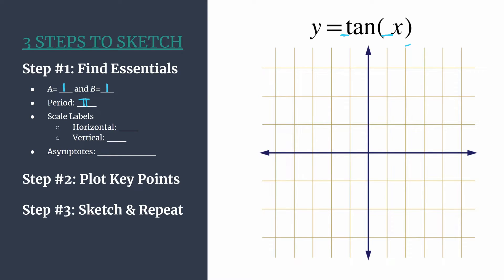Now we can choose nice scale labels. And remember, for our method, we can find our horizontal scale labels by taking the period and dividing by four. So we'll label our horizontal tick marks in increments of π over four. So we'll count one π over four, two π over four, three π over four, and so on.